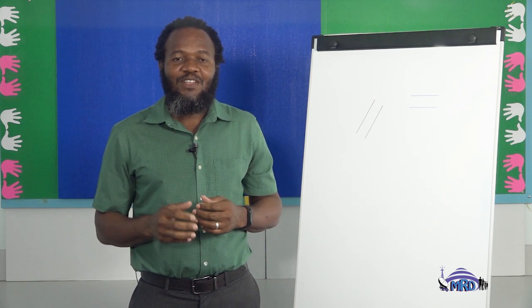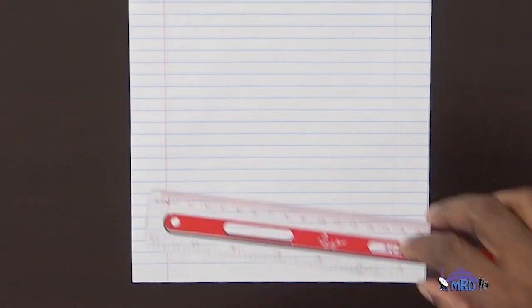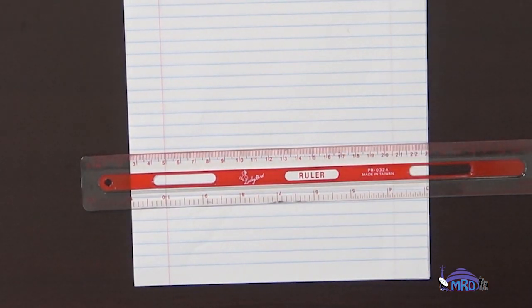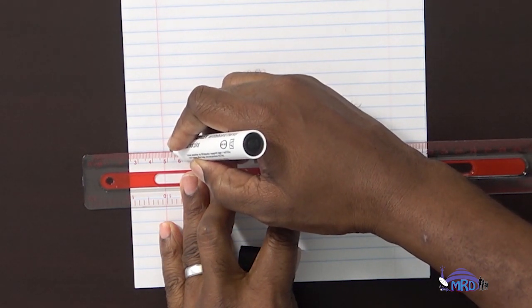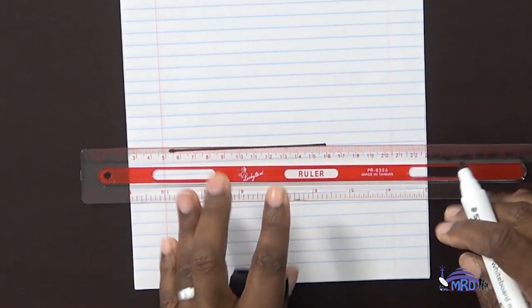Now let's explore some parallel lines on a page. I'll give you a chance to get your book, your ruler, and a pencil or a pen. Looking at my page, you will recognize that the blue lines are parallel to each other. And the pink lines, which are vertical, they are also parallel to each other. We are going to draw a pair of horizontal parallel lines. Remember, horizontal lines go from left to right or right to left. So let's position our ruler on one of those horizontal lines and position our marker at the edge of the ruler. And we draw our first horizontal line.